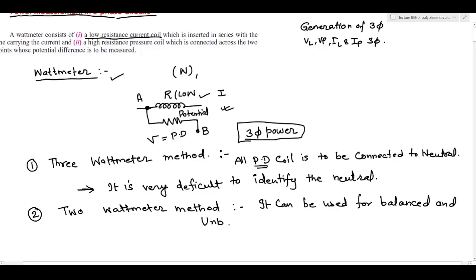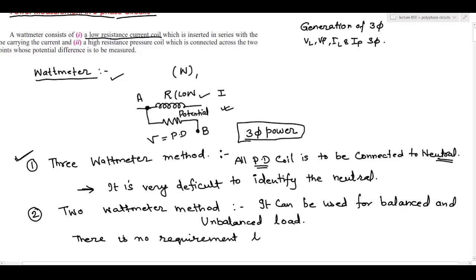The two wattmeter method can be used for both balanced and unbalanced loads — that is a big advantage. The main benefit over the three wattmeter method is that in the two wattmeter method there is no requirement to identify the neutral point.